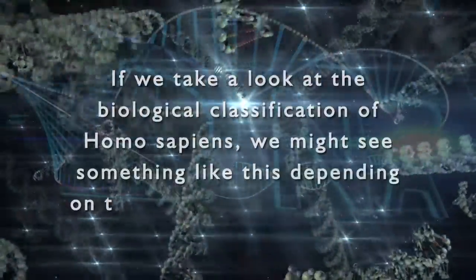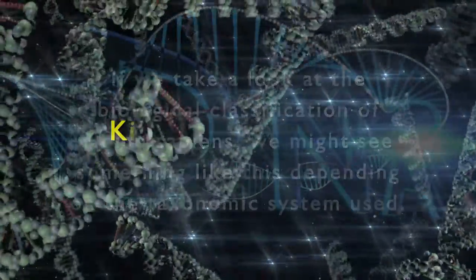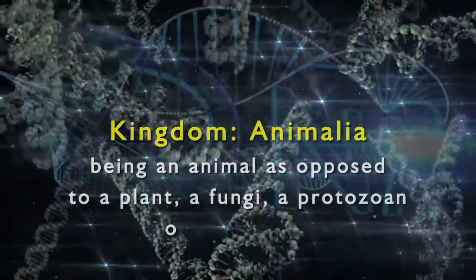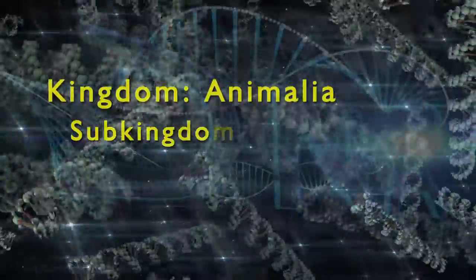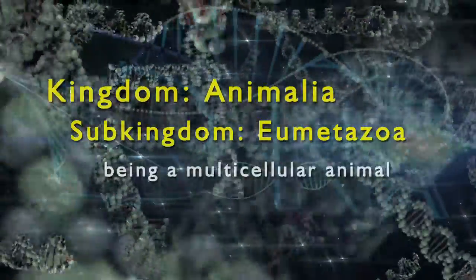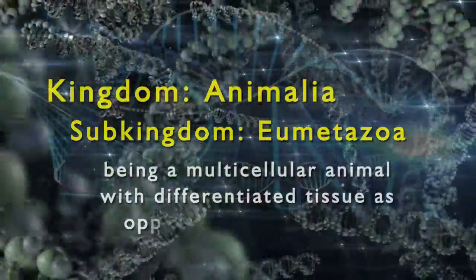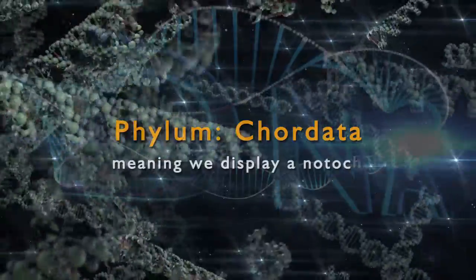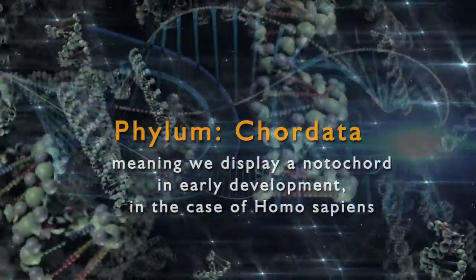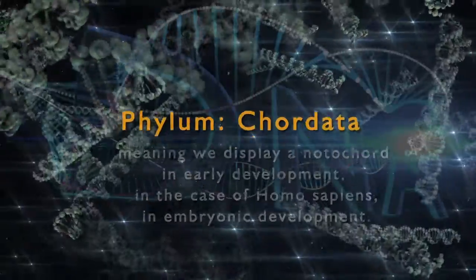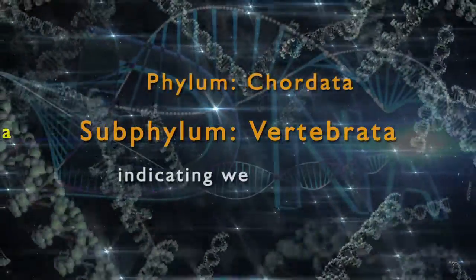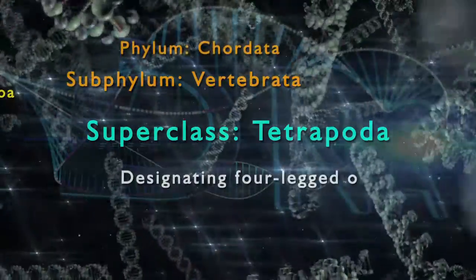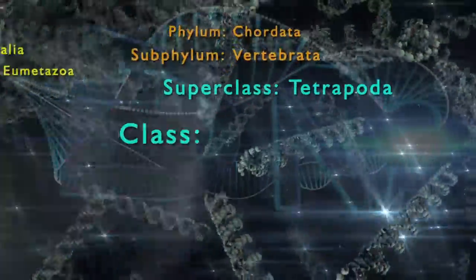Looking at the biological classification of Homo sapiens, we are listed in the kingdom Animalia — being an animal as opposed to a plant, fungi, protozoan, or bacteria. Our sub-kingdom is Eumetazoa, being a multicellular animal with differentiated tissue, as opposed to the Parazoa such as sponges. Our phylum is Chordata, meaning we display a notochord in early development. Our subphylum is Vertebrata, indicating we have a backbone or spinal column. Our superclass is Tetrapoda, designating four-limbed.